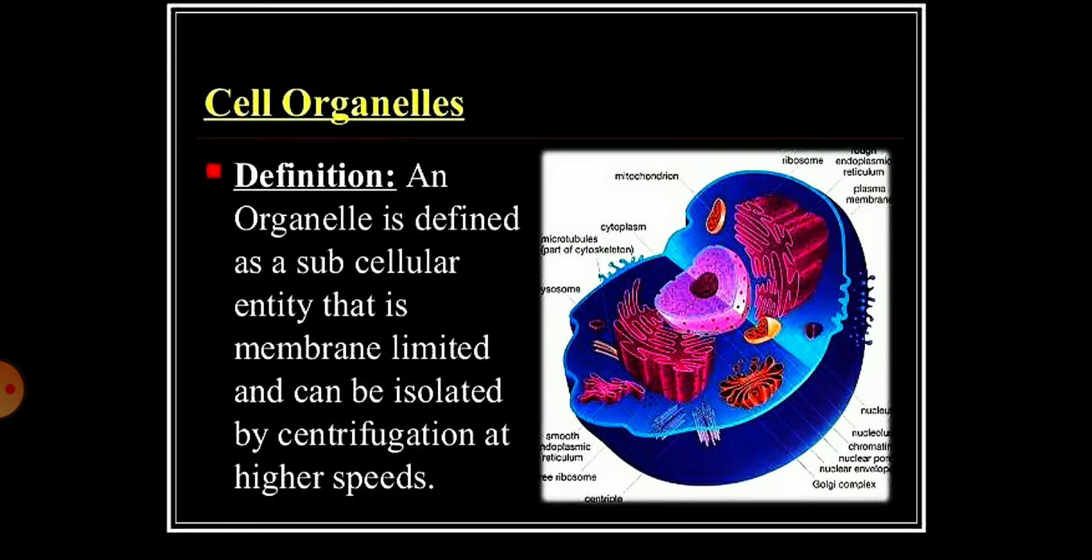That is endoplasmic reticulum. What are their functions? Its main function is that it is membrane and can be complete by biosynthesis functions. How is its structure? These are two types of structures: first, rough endoplasmic reticulum where ribosomes are connected. Second, smooth endoplasmic reticulum where ribosomes don't remain.